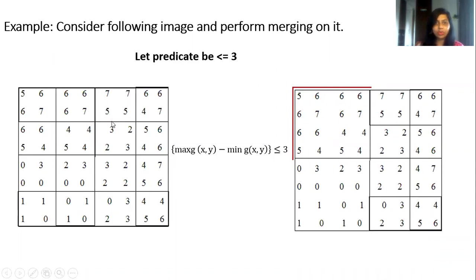Now let us go for these 4 regions. In this maximum intensity is 7. Minimum intensity is 2. Difference is 5. So 5 less than or equal to 3. The condition is false. So since this condition is false, we will not merge these 4 regions.